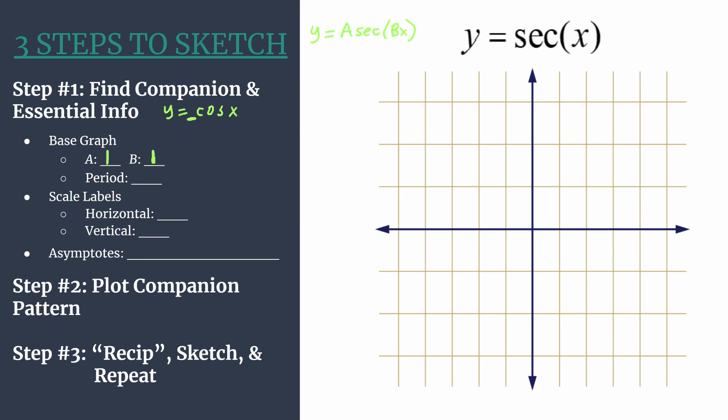And it'll also help us calculate our period. So to do that we just need to take two pi and divide by b. So our period or the length of one horizontal cycle for both the companion graph cosine and the graph that we want secant will be two pi. And remember that's just the horizontal length of one cycle.